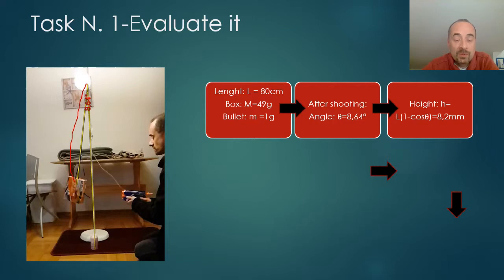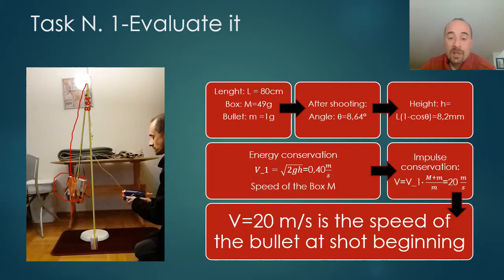Then we know the mass of the box, 49 grams. The mass of the bullet, 1 gram. And by means of this simple formula, length times 1 minus cosine theta, being theta the angle measured right now, we can estimate the maximum height difference of the pendulum.